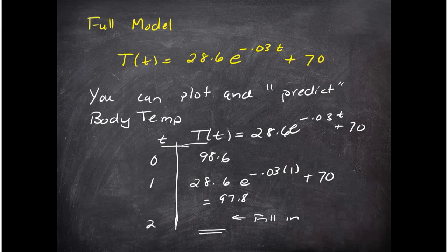You can plot and predict body temperature now from this new model. So for example, if I wanted to know what happens at time equals one, I just plug in one for t and it cranks out and gives me 97.8. If I plugged in two into this formula, I will get another number.